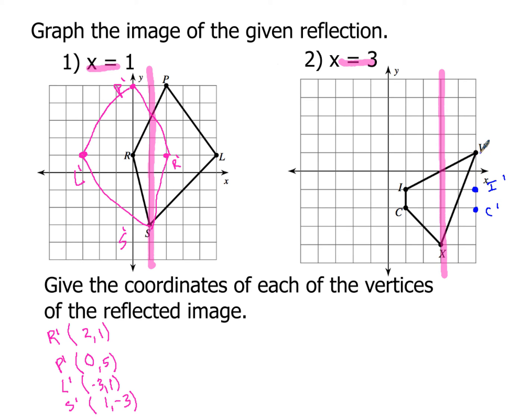Now point V is two away also, but this is two away on the right-hand side of the line x equals three. So that means we're going to reflect that two over on the left-hand side. And that's where V prime is going to be. And point X, well that's just right on the line, so that's not going to change at all. And that's where X prime will be.